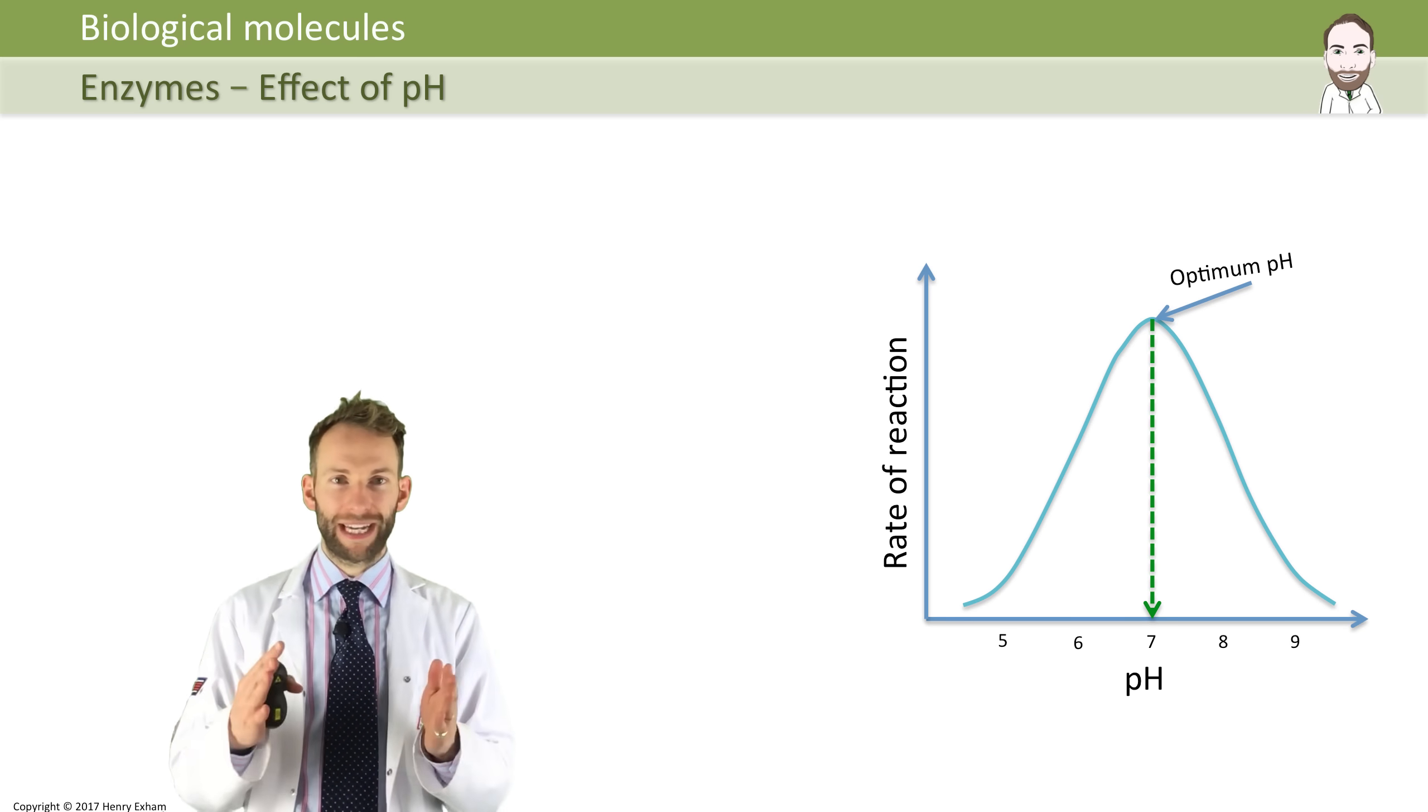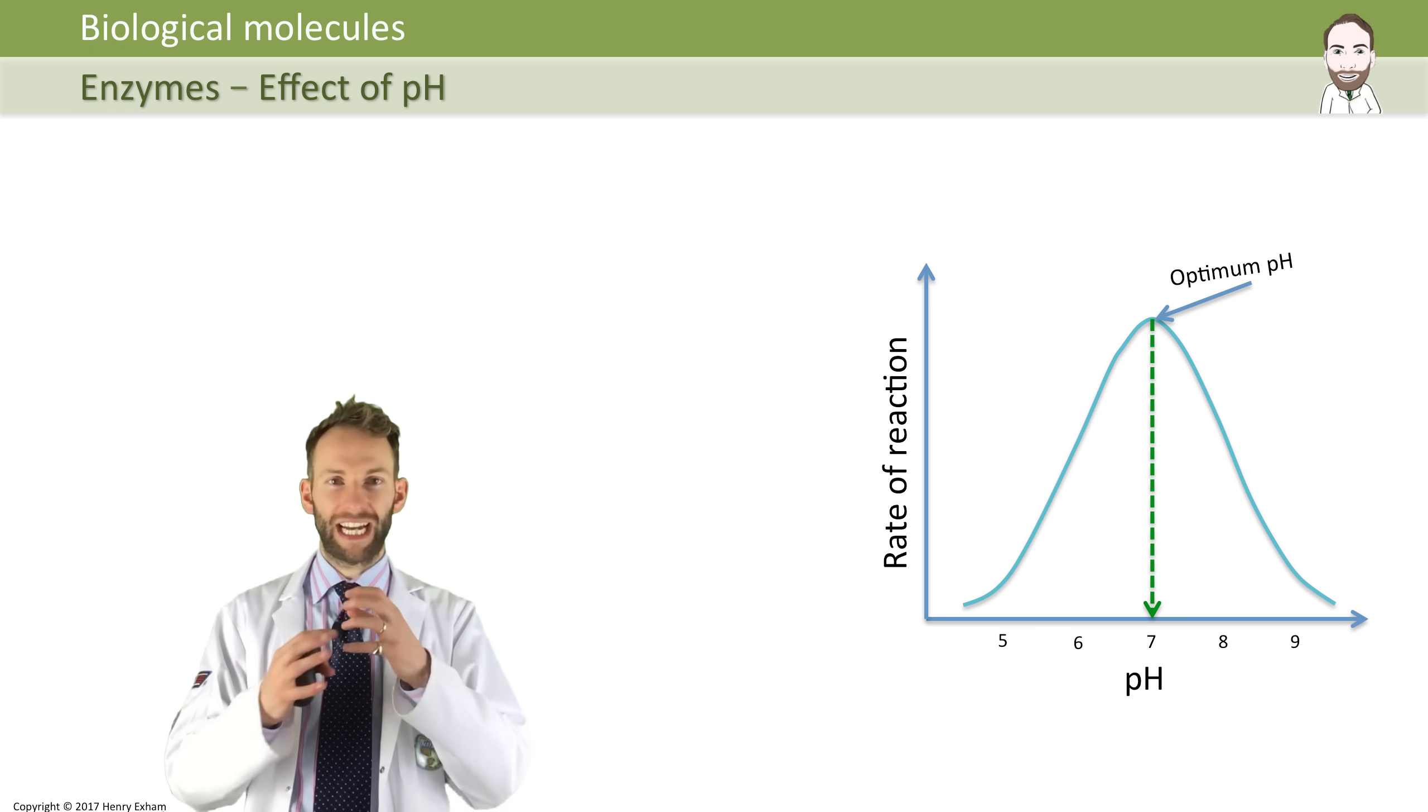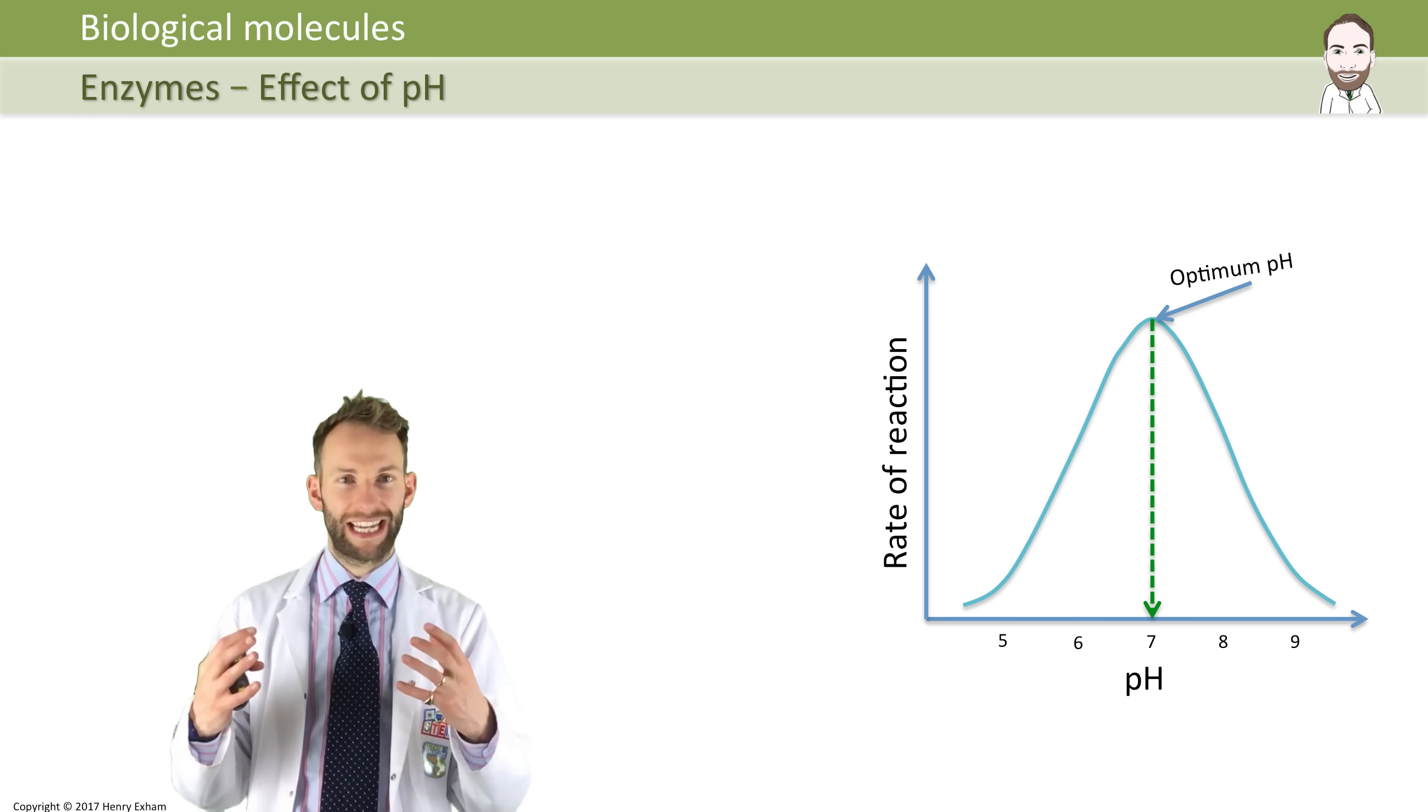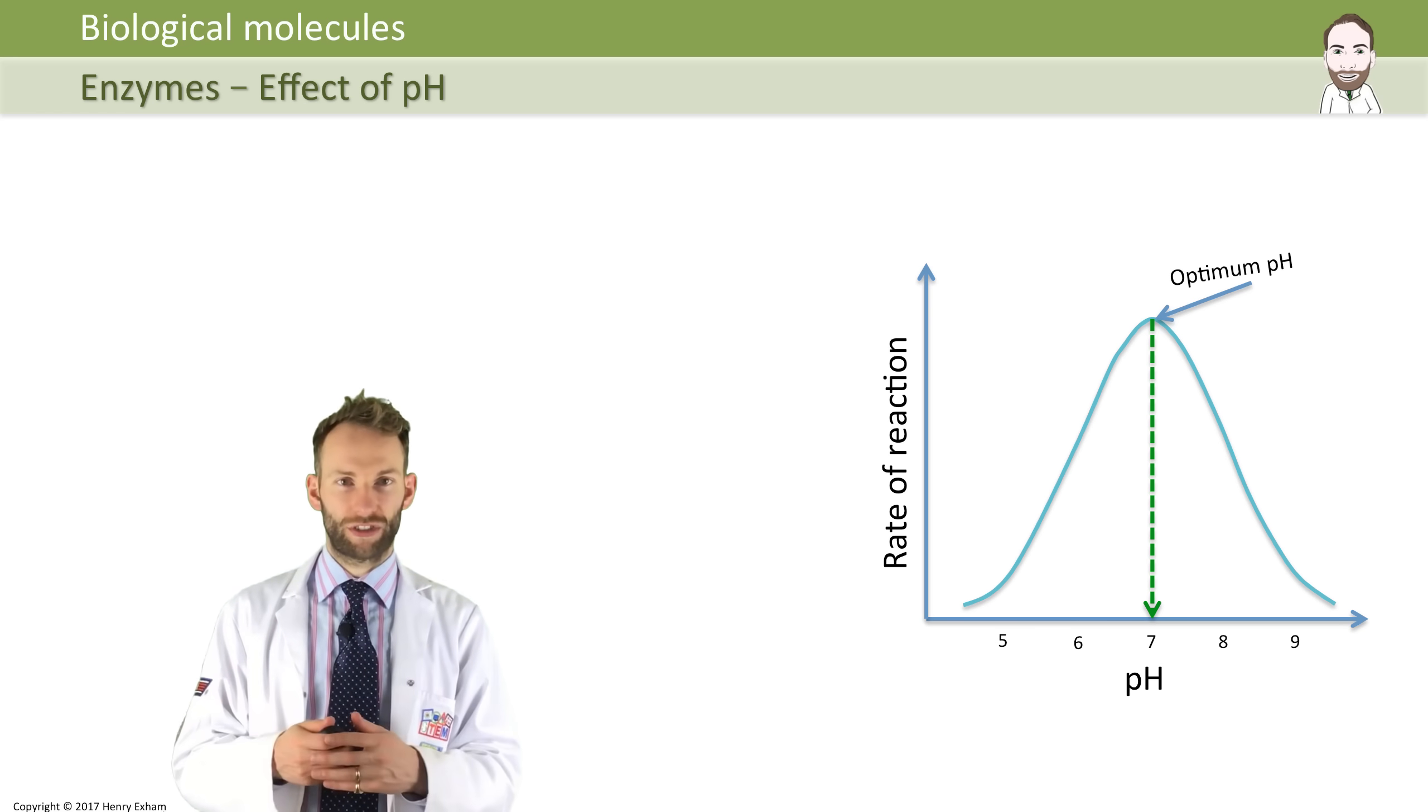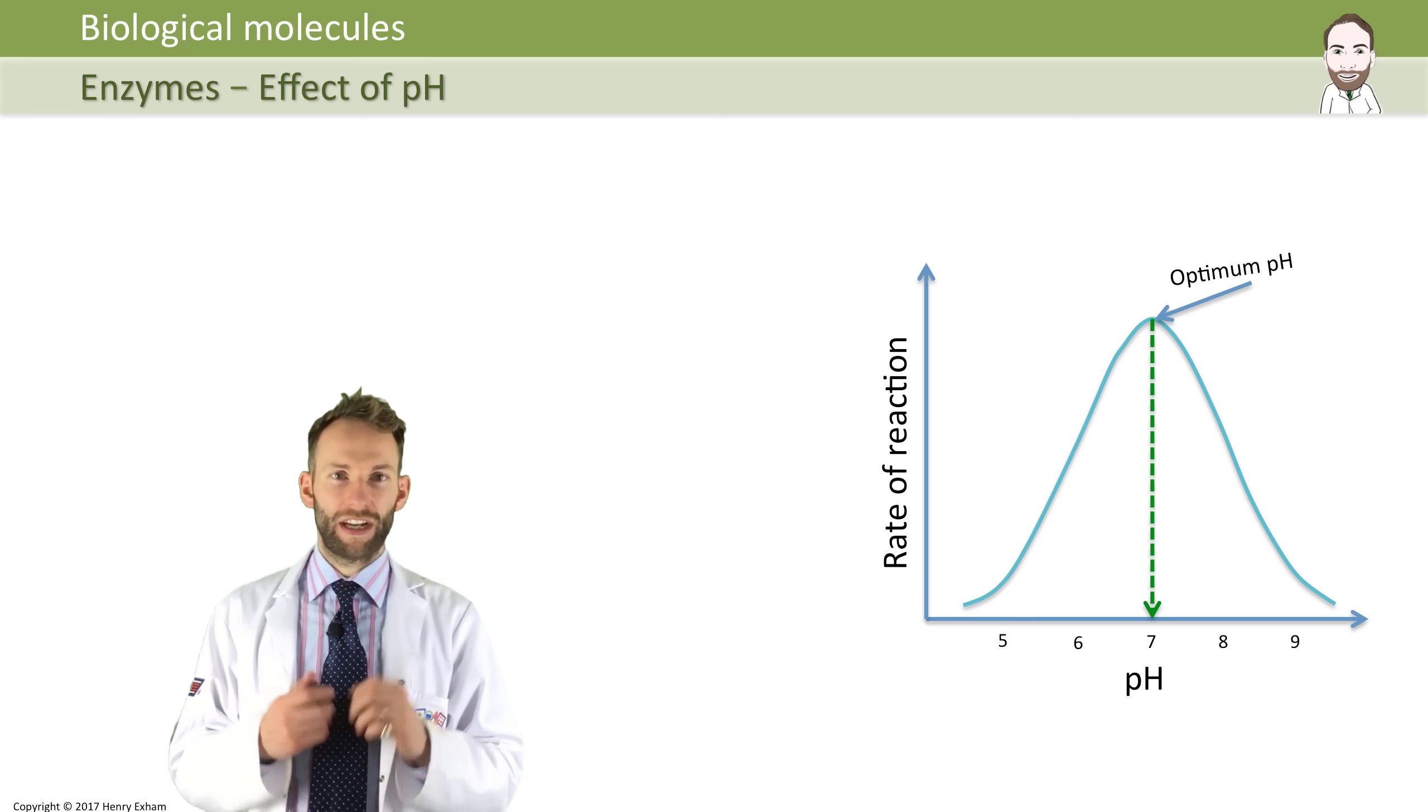But again, if you go outside of that pH - maybe too acidic or too alkaline - then that can change the bonding in the active site. The active site can change shape, starts to stop working, and it becomes denatured again. Therefore the reaction stops. So enzymes have this optimum temperature and optimum pH at which they will work best.